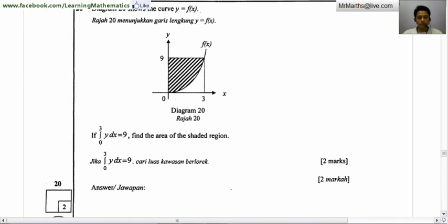Assalamualaikum. Let's continue with question number 20 for SPM trial paper MADS paper 1 2011 in Johor. Diagram 20 shows the curve y equals f(x). If given that the area under the curve between 0 and 3 is equal to 9, find the area of the shaded region.